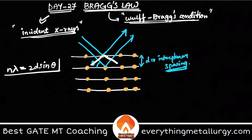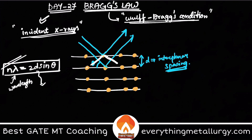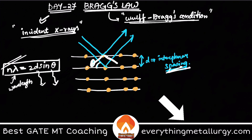I'm not going to cover the full derivation here as it involves more detail, which will be covered in the full course. This mathematical expression — n*lambda = 2d*sin(theta) — is called Bragg's Law, explaining the relation between the wavelength, the interplanar spacing d, and the angle theta.